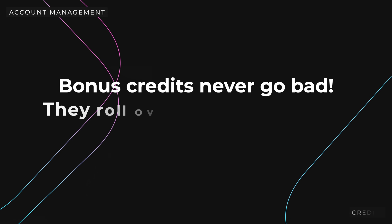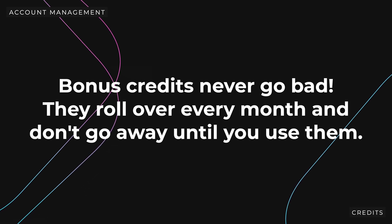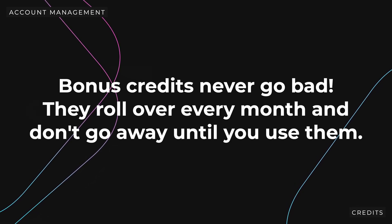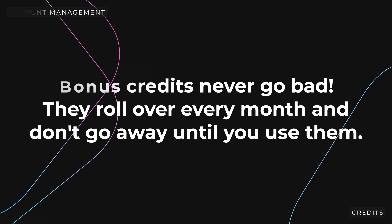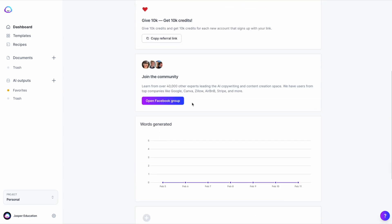Second are bonus credits. These are credits that have been awarded by our team and added to your account manually. You can use these bonus credits after your trial or after you have used up your plan credits. Bonus credits will always roll over month to month until you use them up — so they don't go bad. You can earn bonus credits in several ways; view the usage and billing page in the app to learn more.